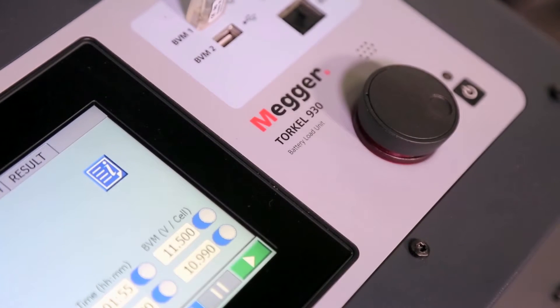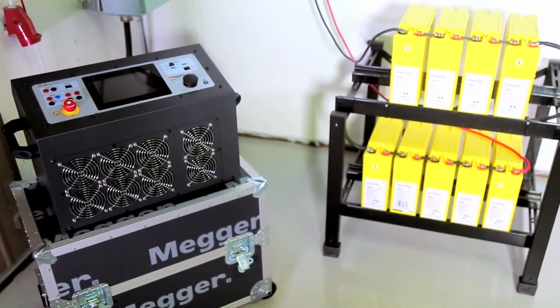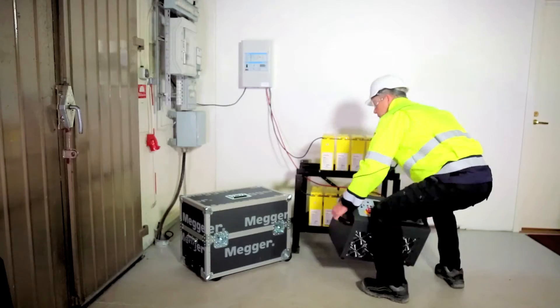Torkel 900 performs load tests or discharge tests to determine battery systems actual capacity. The instrument is lightweight enough to be carried by one person as well as be checked in as luggage on flights.